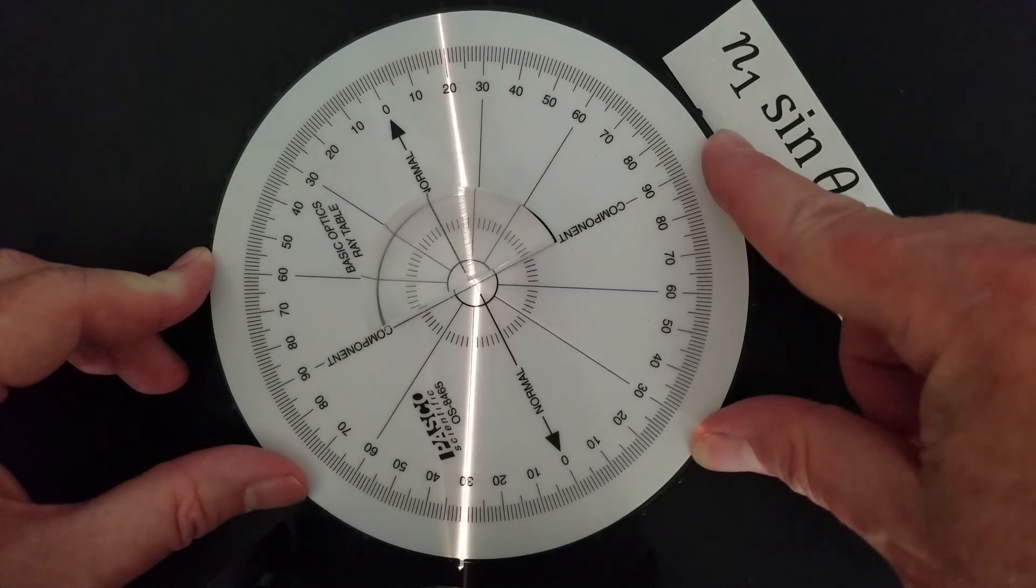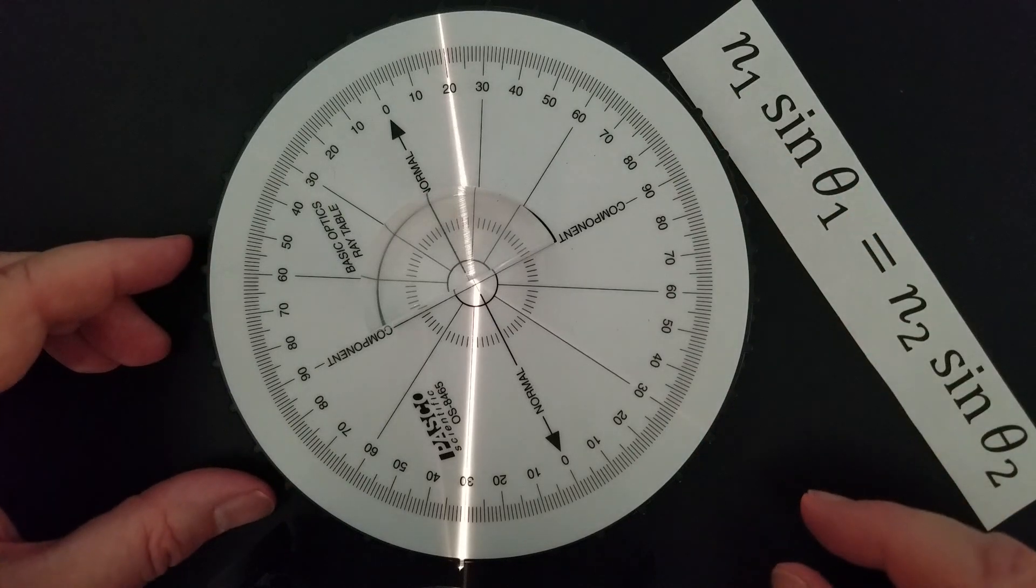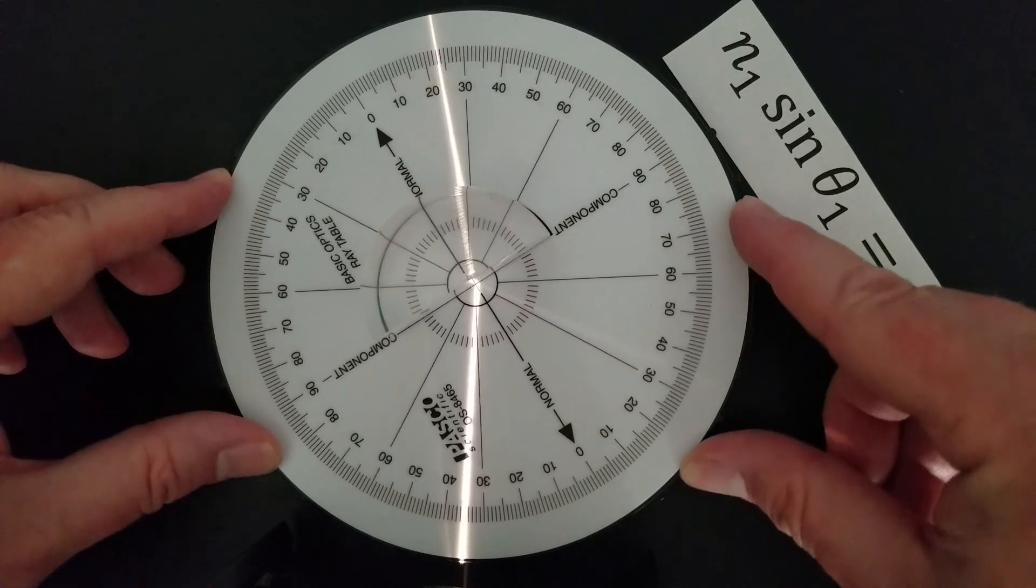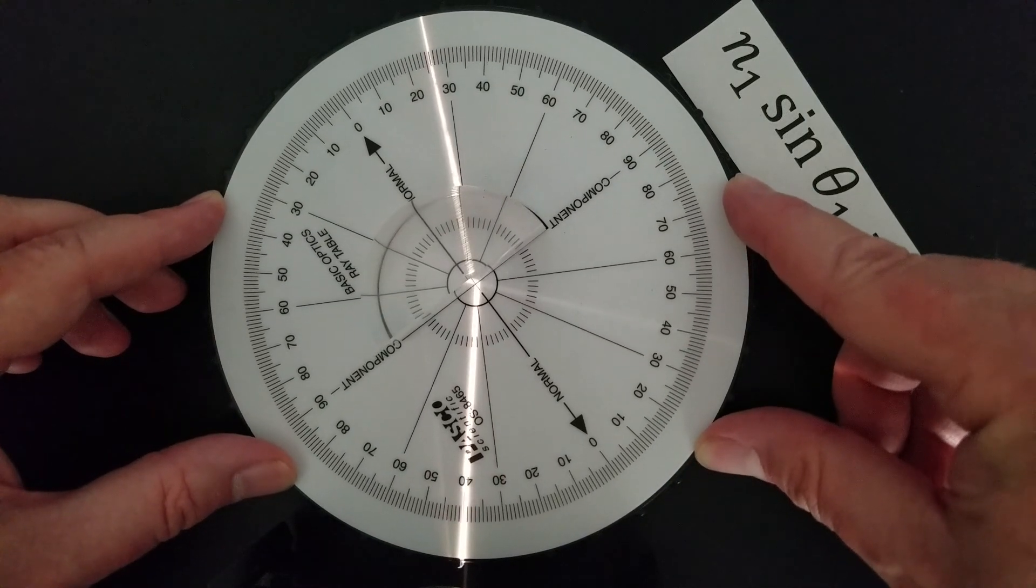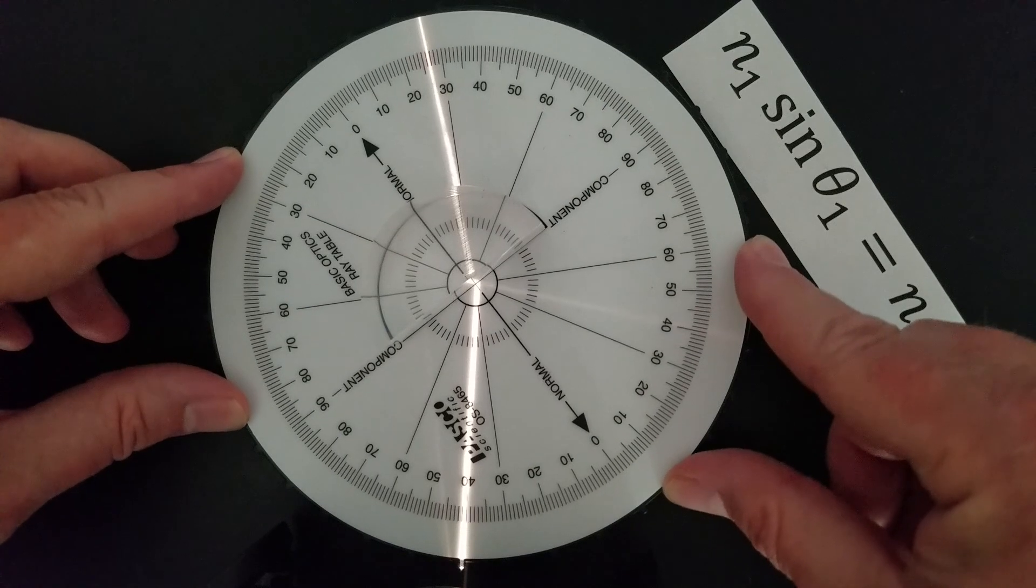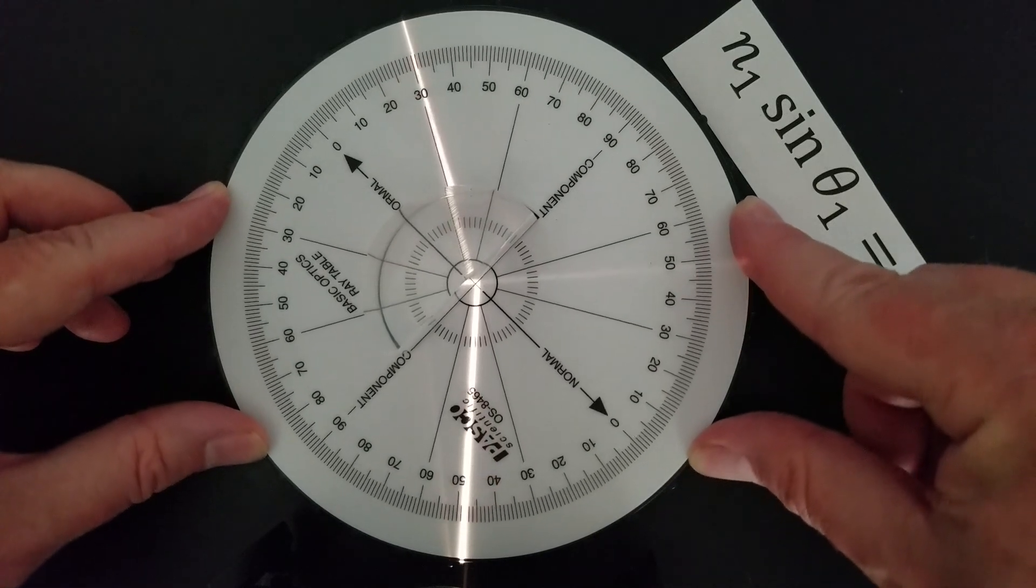So here we've got an angle of incidence of 30 degrees, angle of refraction of about 20. It's good to take several measurements and then average results.